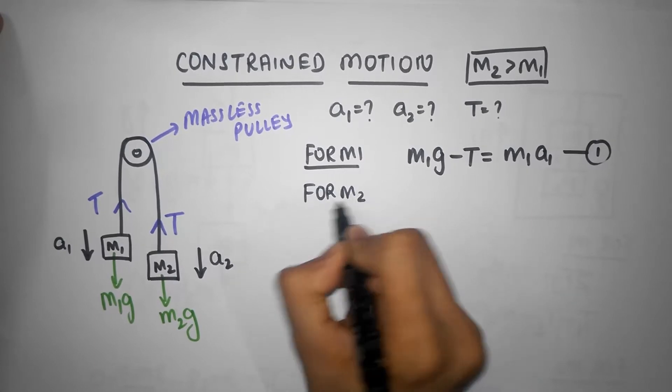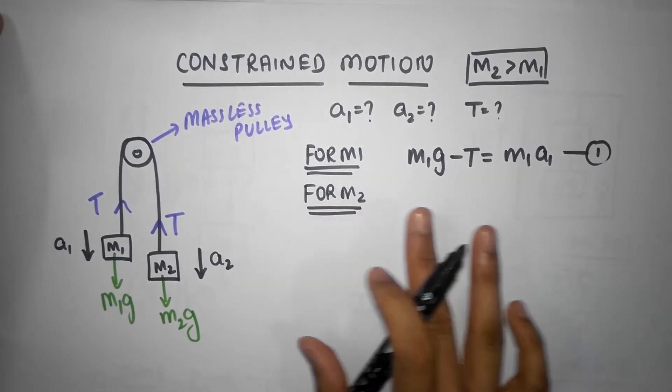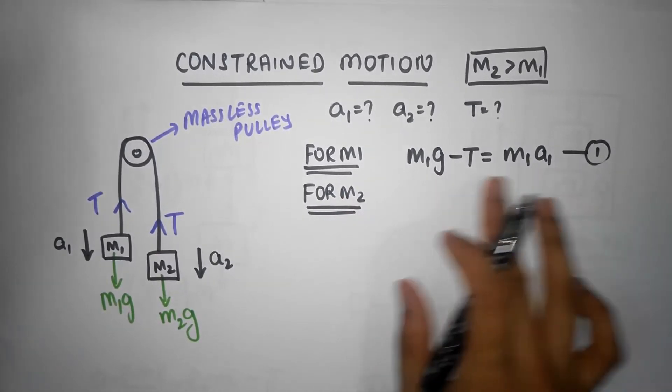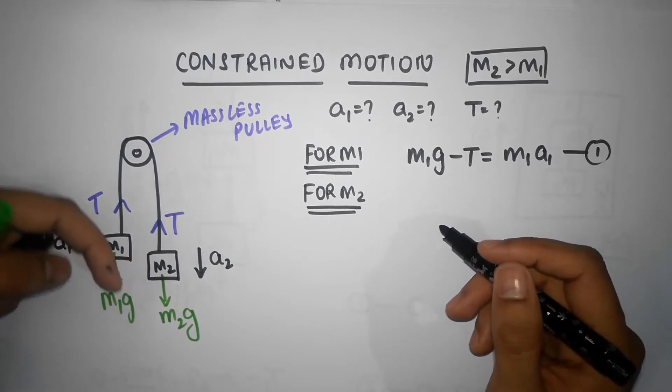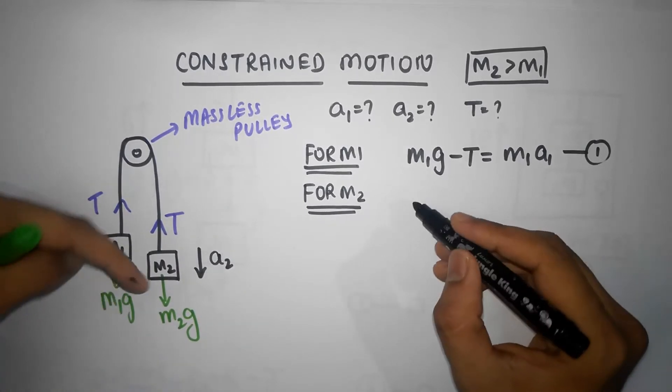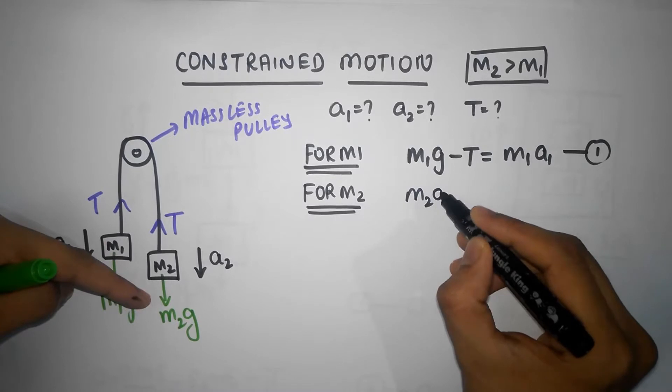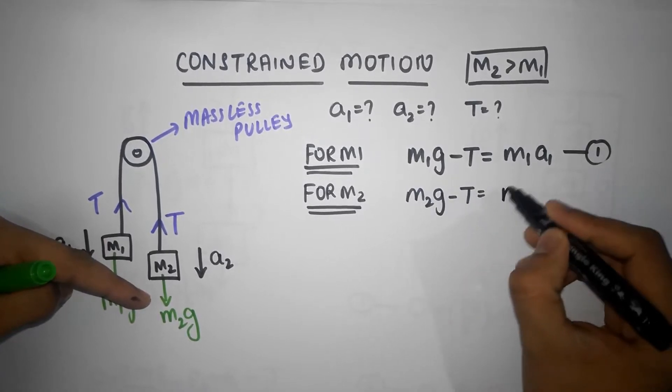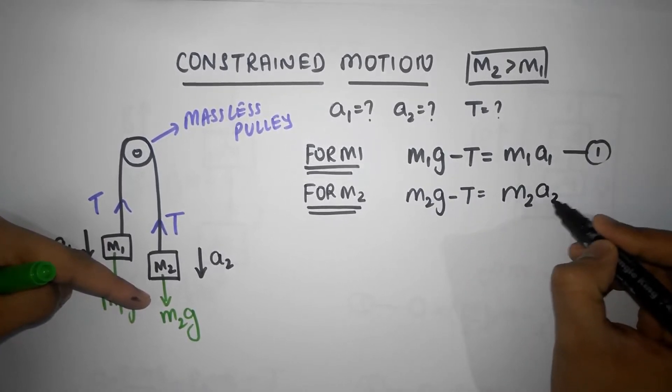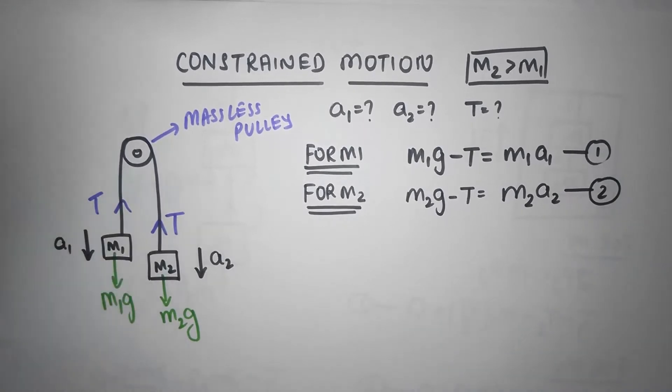For M2, I'm going to again take downwards positive. So I'm going to have M2g minus T should be equal to M2 A2. That's equation number two.